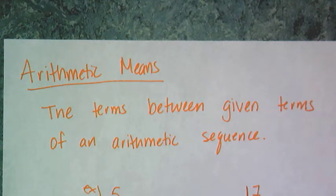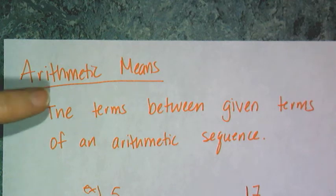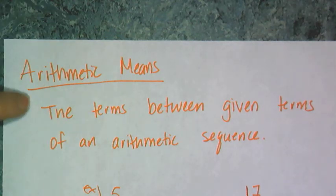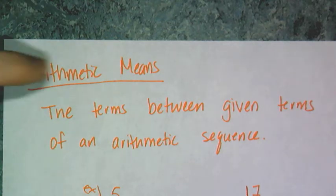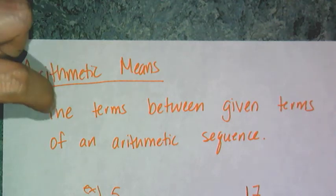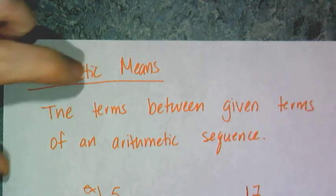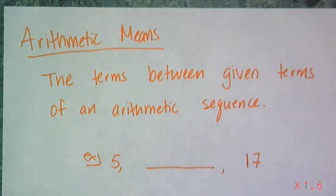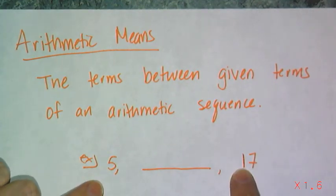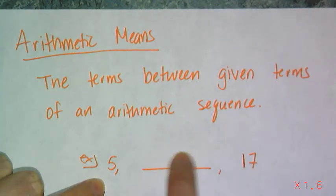Now in Algebra 2, the definition changes a little bit. The only difference is that you can actually have more than one arithmetic mean. All arithmetic means are just defined as the terms between given terms of an arithmetic sequence. So I'm telling you, 5 and 17 are terms in a sequence, and there are things in between there.